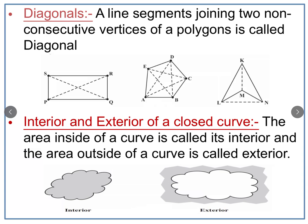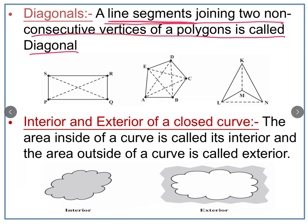Next, diagonals. You have also studied diagonals in previous classes. A diagonal is a line segment joining two non-consecutive vertices of a polygon — non-consecutive means the vertices which are not adjacent to each other. For example, starting from point P, its adjacent vertices are S and Q, so joining P-Q or P-S does not give a diagonal. The non-adjacent vertex of P is only R, so P-R is a diagonal.